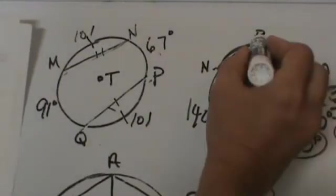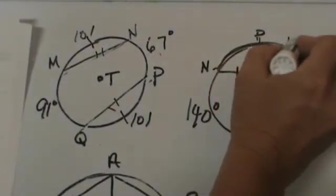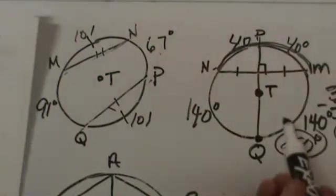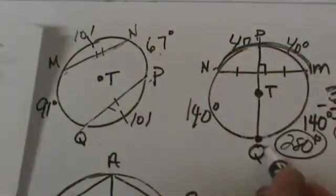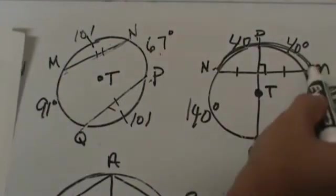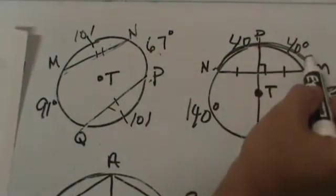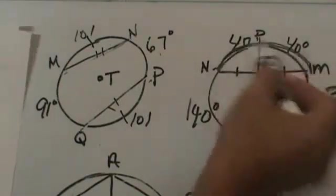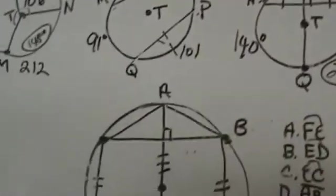We know that splits into two equal parts of 40° and 40°. Another way to do it is to note that PQ is a diameter — if this arc is 140° then that portion is 40°. Adding those two 40° arcs together gives the same result. Just another option.